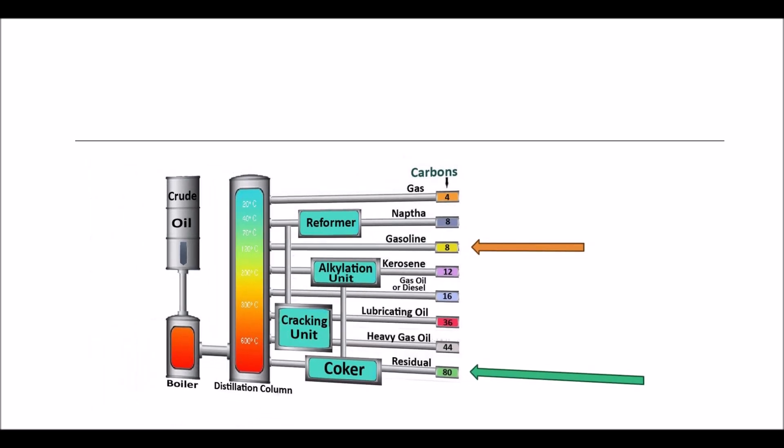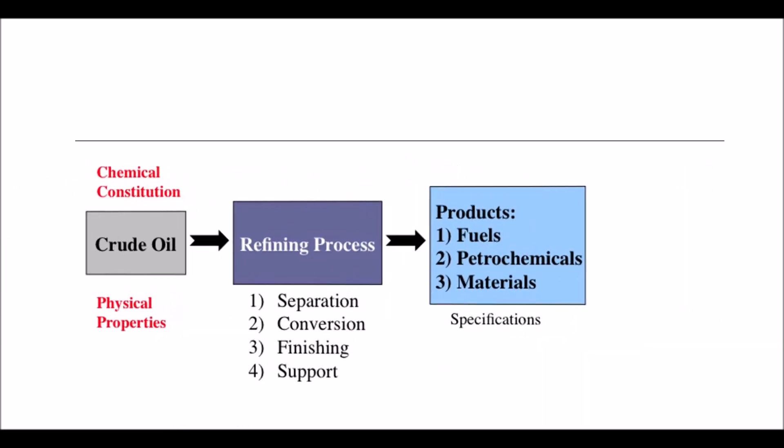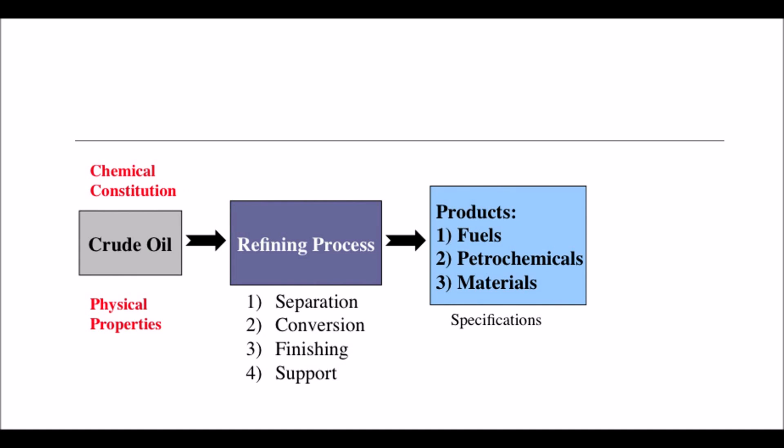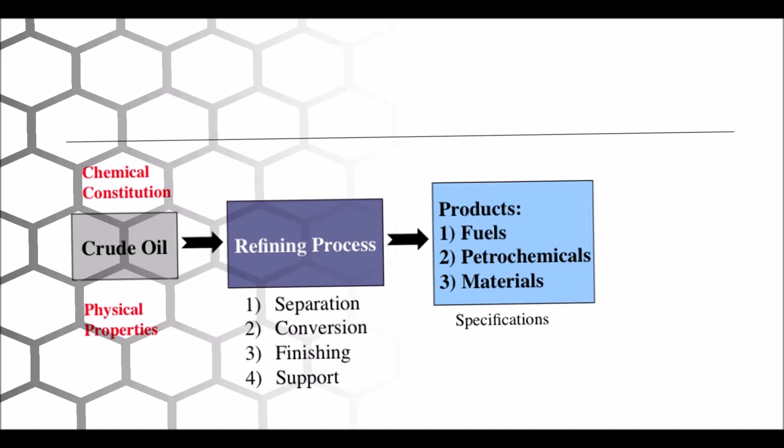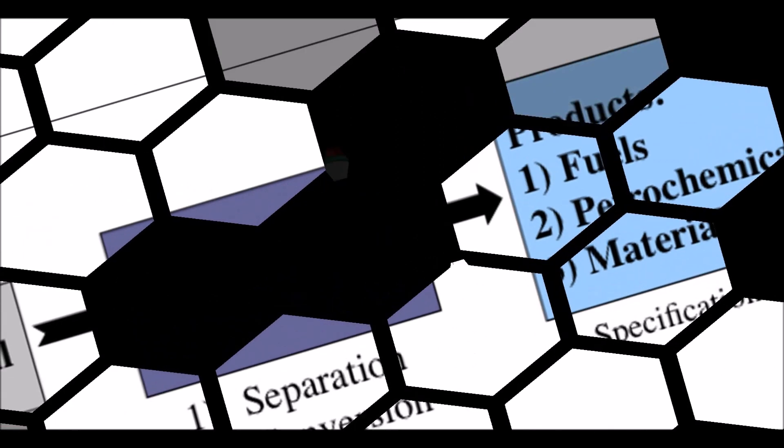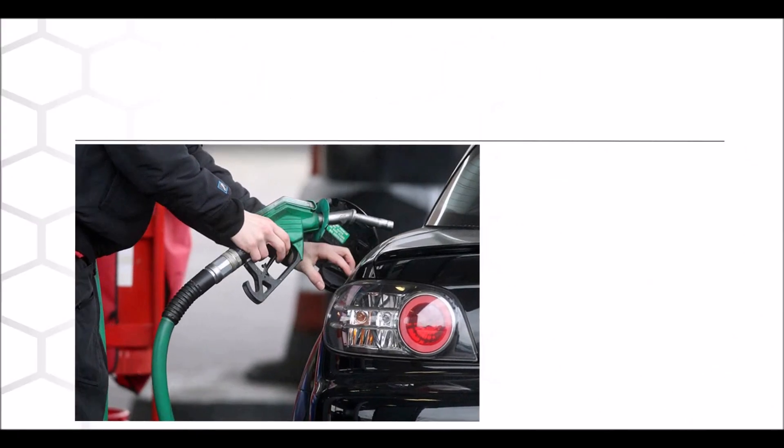You would be surprised to learn that there are 161 different types of oils produced at different temperatures in the distillation chamber. Every oil product has its own chemistry and usage — for instance, gasoline is used to fuel vehicles, whereas residual oil is used to make asphalt and tar.